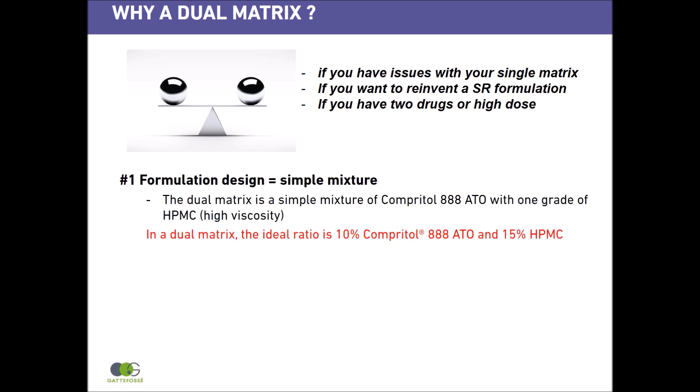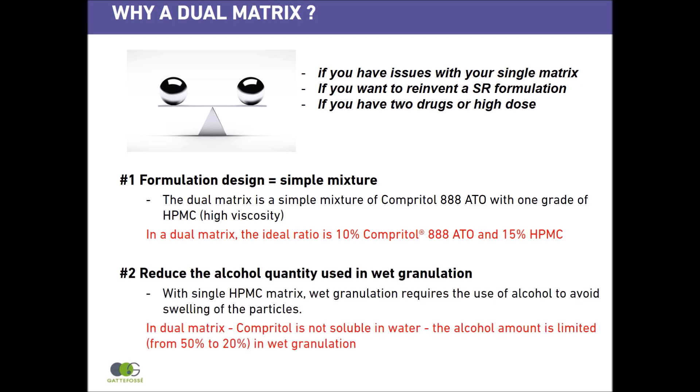When you do a dual matrix, it's a simple mixture of Compritol 888 ATO with only one grade of HPMC. In dual matrix, the ideal ratio is 10% Compritol and 15% HPMC. Secondly, you can reduce the alcohol quantity used in wet granulation. When you have a single HPMC matrix, wet granulation requires the use of alcohol to avoid swelling of the particles.